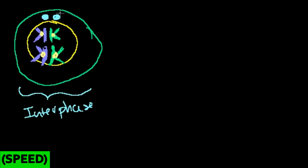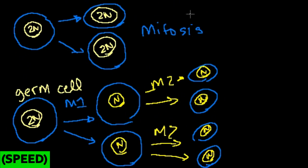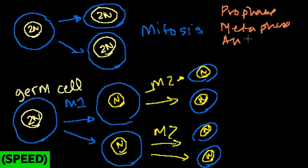Once that happens, we're ready for either mitosis or meiosis — but we're going to do meiosis now; this is a germ cell. So what happens is we enter prophase 1. In mitosis you have prophase, metaphase, anaphase, and telophase. In meiosis, you experience these in each stage — so you have prophase 1, metaphase 1, anaphase 1, and telophase 1, followed by the same sequence again in meiosis II.